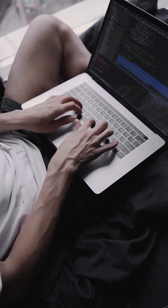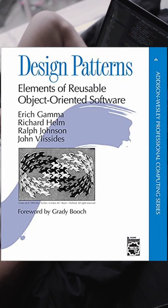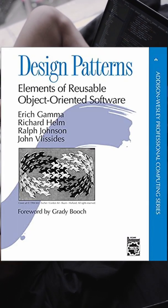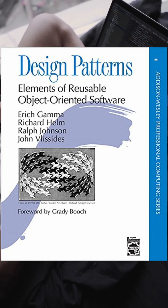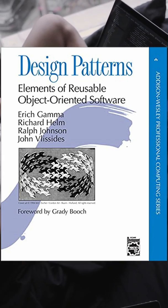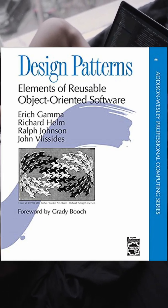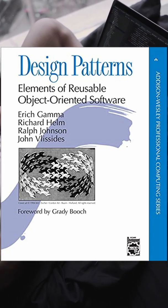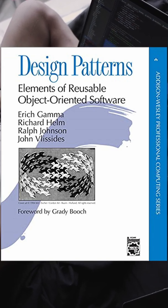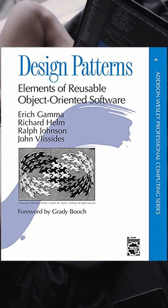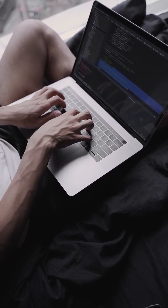Design patterns have been around since 1977 but gained popularity in the early 1990s when the so-called Gang of Four published Design Patterns, Elements of Reusable Object-Orientated Software, an instrumental book in shaping the way we think about design patterns today.